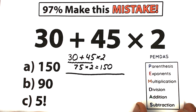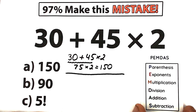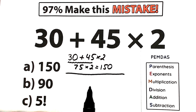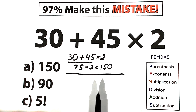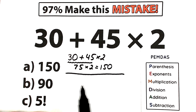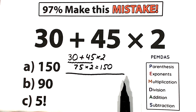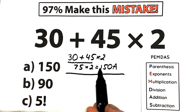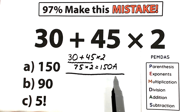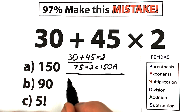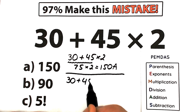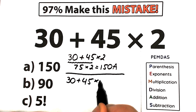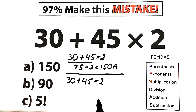For this question, let's look at PEMDAS. PEMDAS is the math operation order — we have a lot of steps. Let's check this question with PEMDAS and verify whether 150 — option A — might be the correct answer. So we have 30 plus 45 times 2.